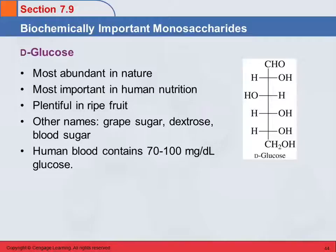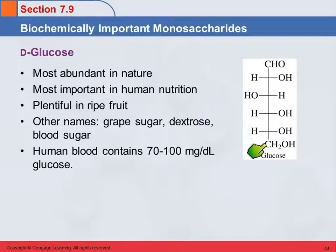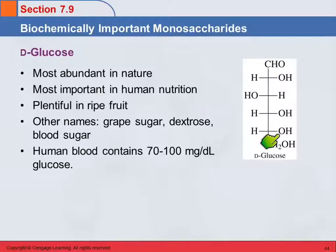Glucose is important. Its structure is shown here. Glucose is a hexose — counting six carbons, it's an aldohexose. We should learn the structures for these biochemically important monosaccharides because we're going to encounter them a lot. It's an aldose with six carbons, and you just need to remember the pattern for where the OH groups are.